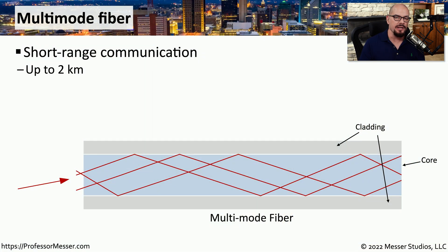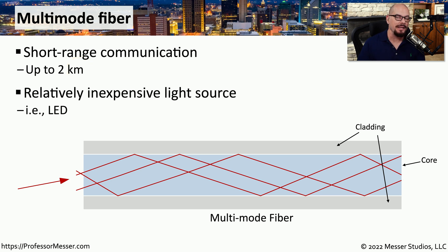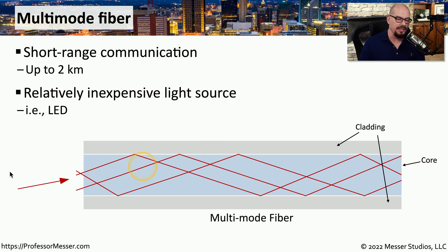There are two broad categories of fiber optic cable: multimode fiber and single mode fiber. Multimode fiber is commonly used for short range communication, and in the world of fiber optics, short range means anywhere up to about two kilometers in distance. Each networking standard has its own set of maximum distances depending on the type of cabling used. Multimode fiber tends to have a relatively inexpensive light source, so commonly we'll see LEDs being used. It is called multimode fiber because when we put light into one end, multiple reflections can occur as that light moves through the fiber, bouncing back and forth through the core and being collected on the other side.